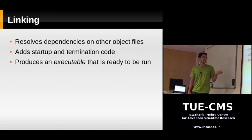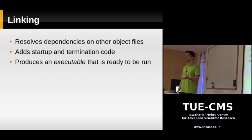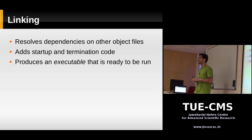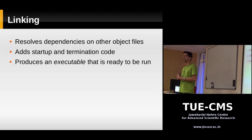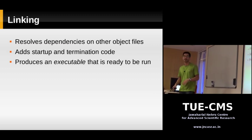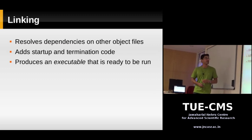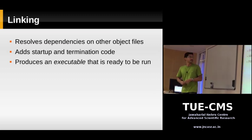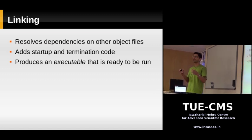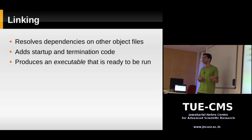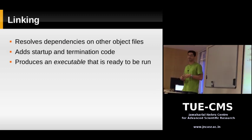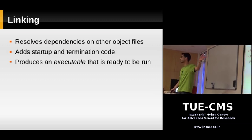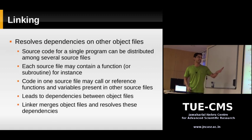The last stage is linking — this is the stage that actually produces your executable as output. The linking stage takes as input one or more object files. The linking stage is done by a program called the linker. The linker takes these object files and produces an executable. Before producing an executable, the linker adds the startup and ending code — the operating system specific code. But there's something more important the linker does: it merges object files together. At the end of the linking stage, what you get is an executable that you can run with ./